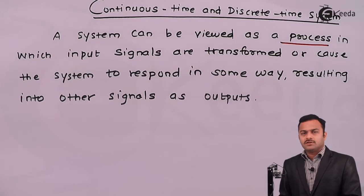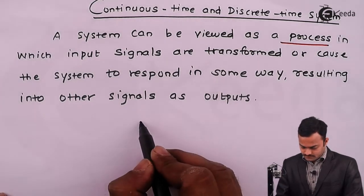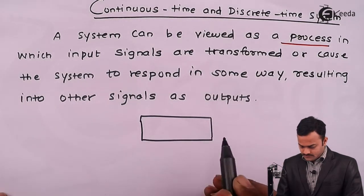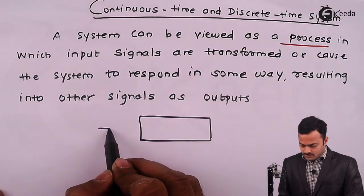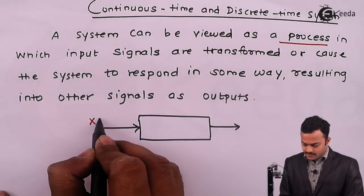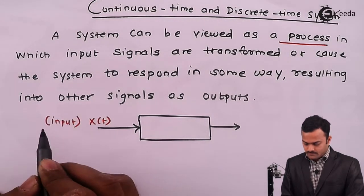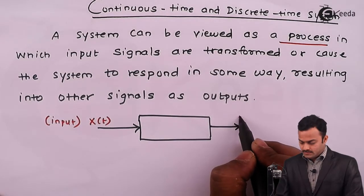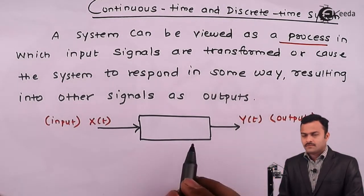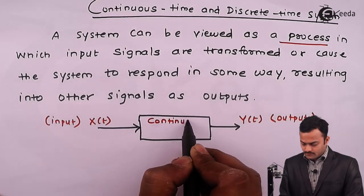The simple representation of any system will be like this — it just relates two signals. One we call as input signal, represented by x(t), and on the other side we get the output signal y(t). So x(t) as the input signal passes through this continuous time system to give y(t).